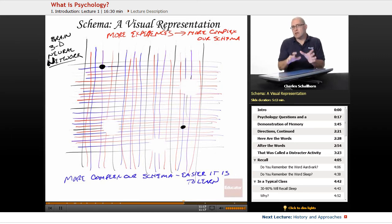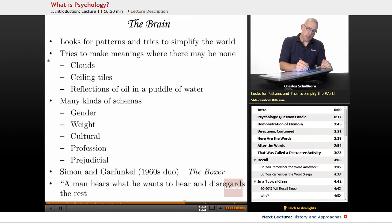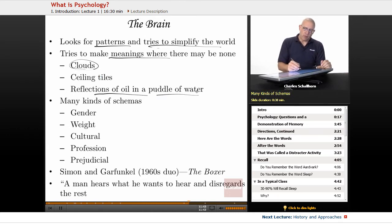Neural network. So this is a schema of visual representation. The brain looks for patterns and tries to simplify the world. Schemas help us do this. The brain tries to make meanings where there may be none. When we look at clouds, when we look at ceiling tiles, we'll find patterns where there really are none. Our brain alters reality. We see reflections of oil in a puddle of water. But we have different kinds of schemas, and these schemas may deal with gender. The first thing you notice about a person is, are they male or female? We might have weight schemas. Are they skinny? Are they fat? Are they fit?